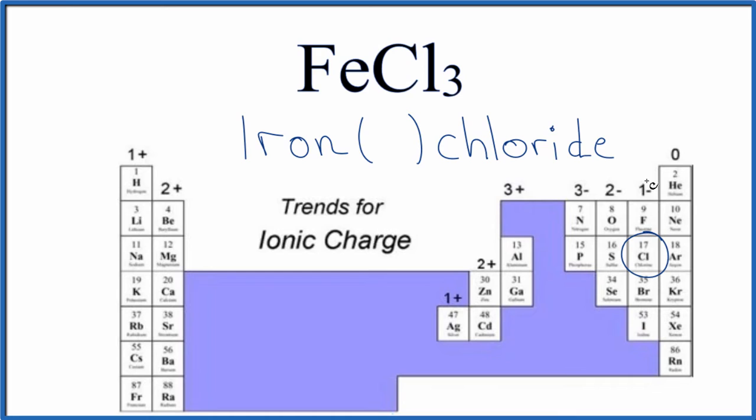Chlorine right here, group 17, that's one minus. So we have three of them. Three minus. Iron has to be three plus. So we put a Roman numeral three. And we're done. Iron three chloride.